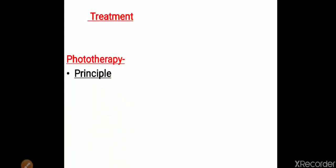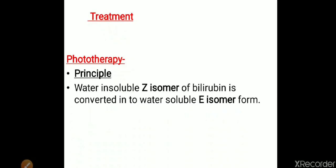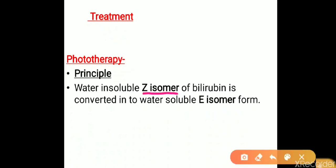Sometimes physiological jaundice may require treatment, and the main treatment is phototherapy. The principle behind phototherapy relates to the geometric isomers of bilirubin. Bilirubin has two isomers: the Z isomer, which is water-insoluble, and the E isomer, which is water-soluble. In phototherapy, the water-insoluble Z isomer is converted into the water-soluble E isomer, allowing bilirubin to be excreted through the urine.